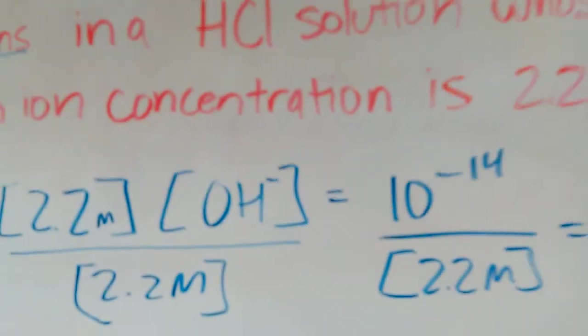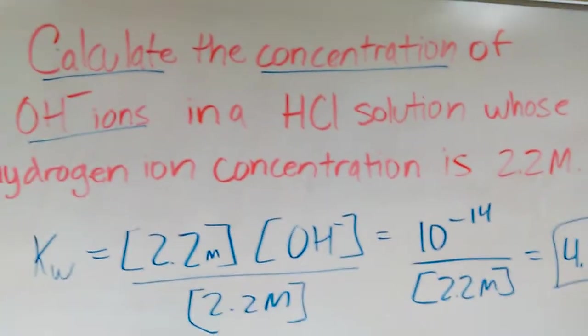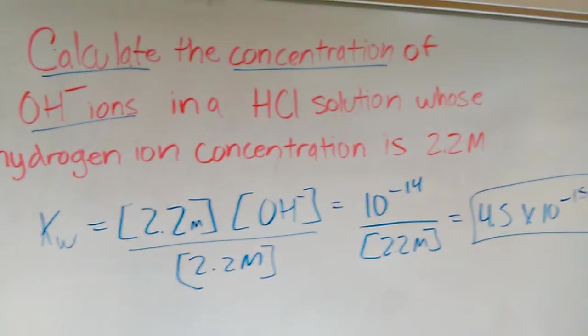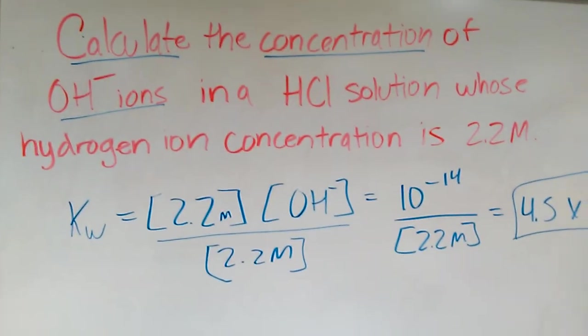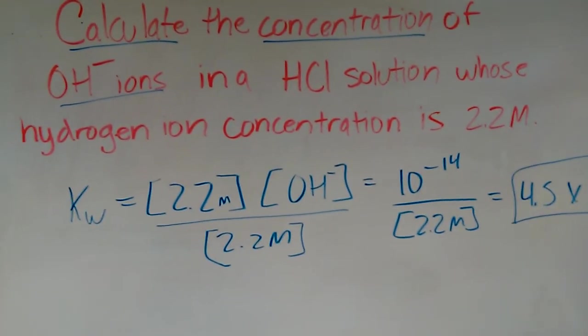Once again, they're just asking you to calculate the concentration of OH⁻ ions in an HCl solution whose hydrogen ion concentration is 2.2 molarity.